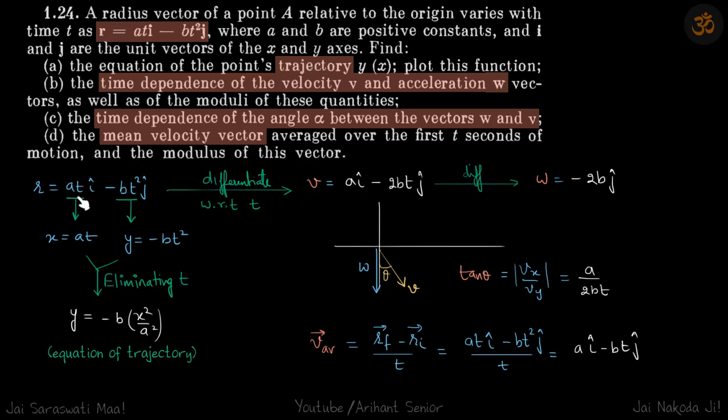So position is given as at i cap minus bt squared j cap. We'll write it in form of x and y. Because in trajectory, we need the relation between x and y, and we need to get rid of time. Trajectory is how the path will look like.